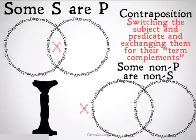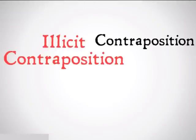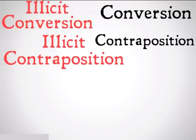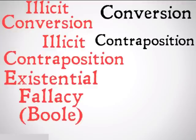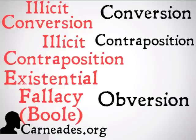So it is once again a fallacy of illicit contraposition. Today was illicit contraposition; yesterday was illicit conversion and normal conversion. Tomorrow is going to be the existential fallacy for Boolean and obversion — there's no illicit obversion because it works for all four kinds of statements. Watch a new video every single day for 100 days here at carnades.org, and stay skeptical, everybody.